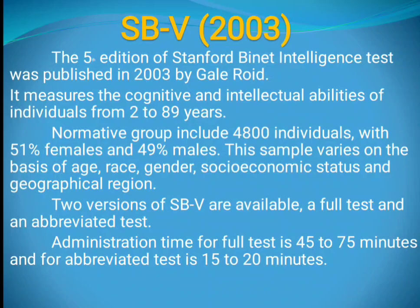The 5th edition of Stanford Binet intelligence test was published in 2003 by Gail Roid. This SB5 measures the intellectual and cognitive abilities of human beings from 2 years to 89 years old.